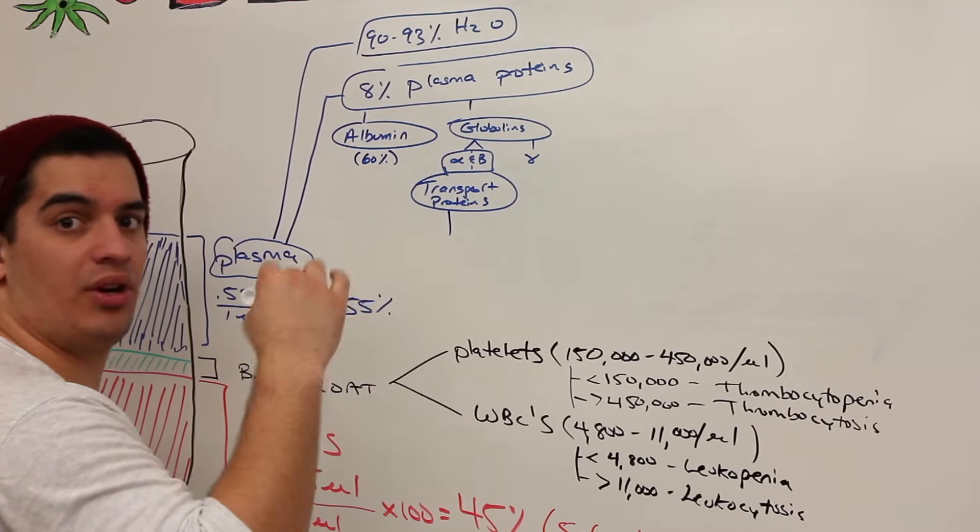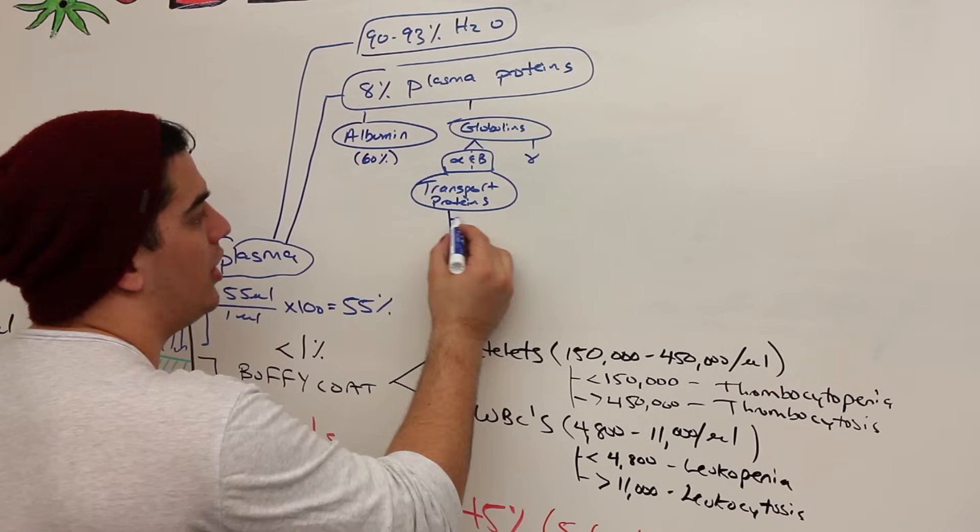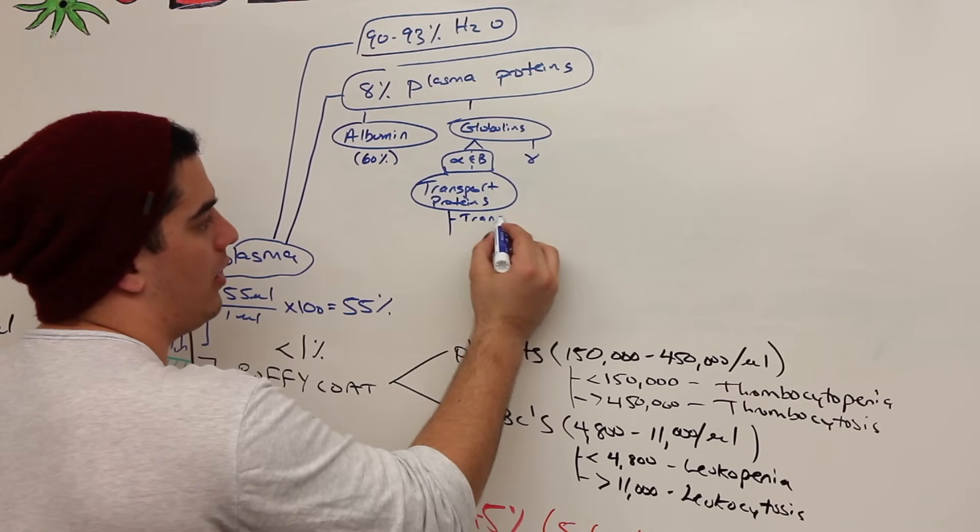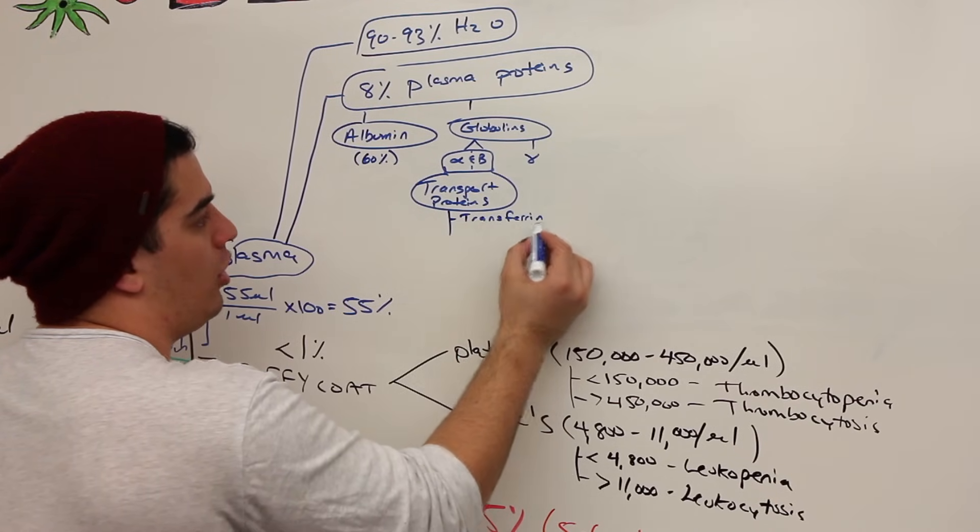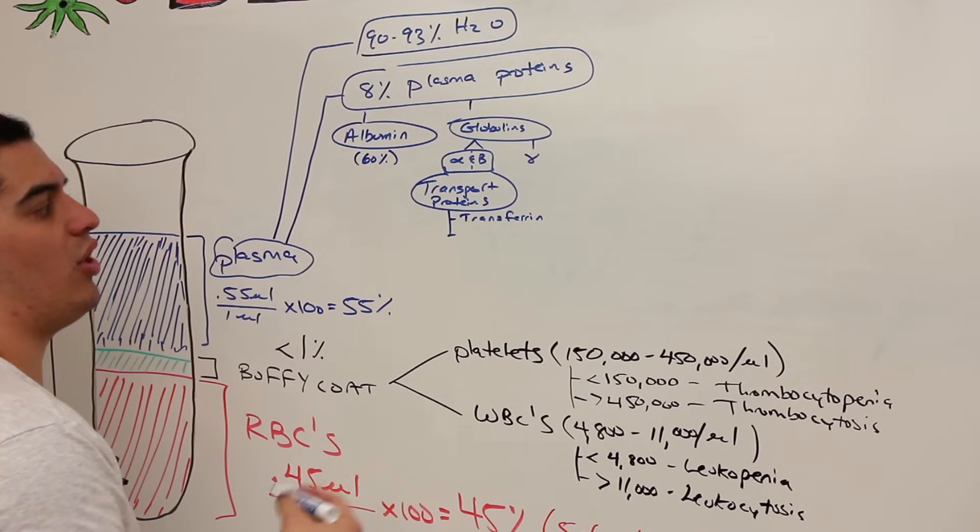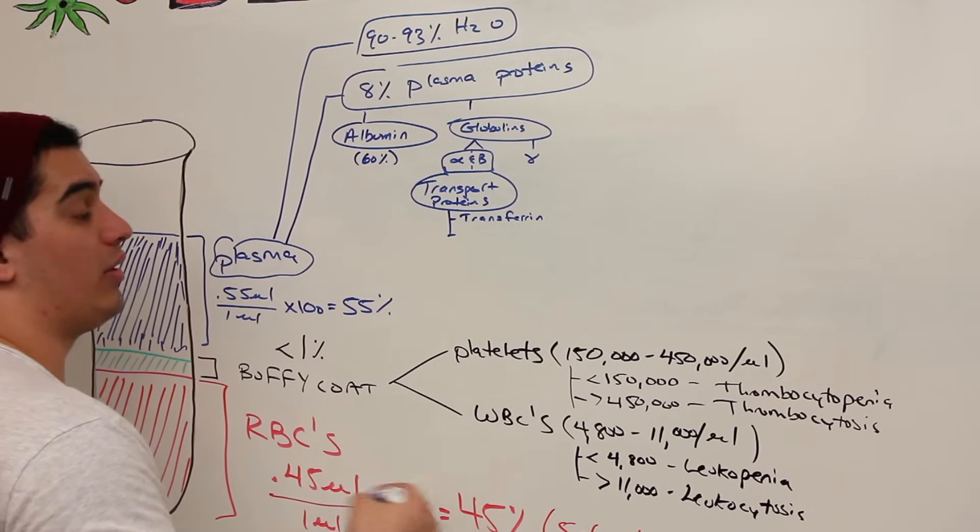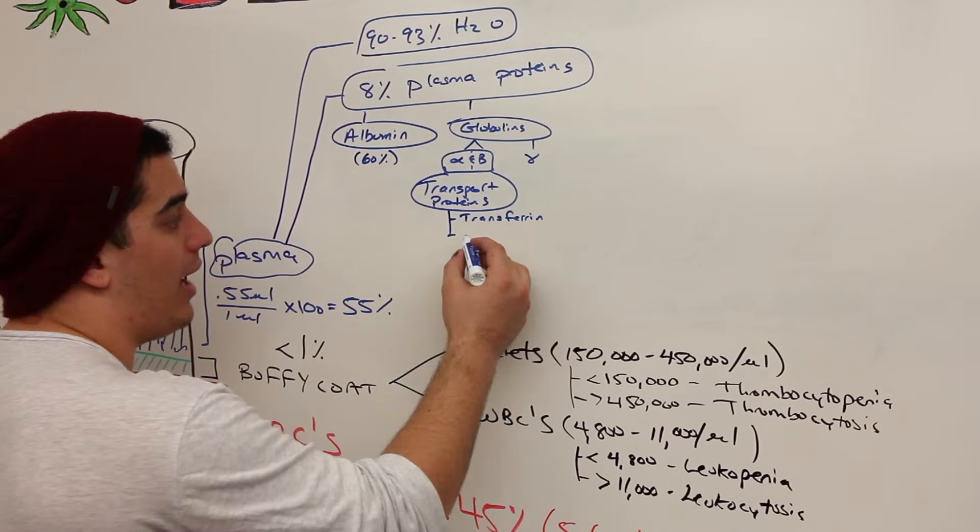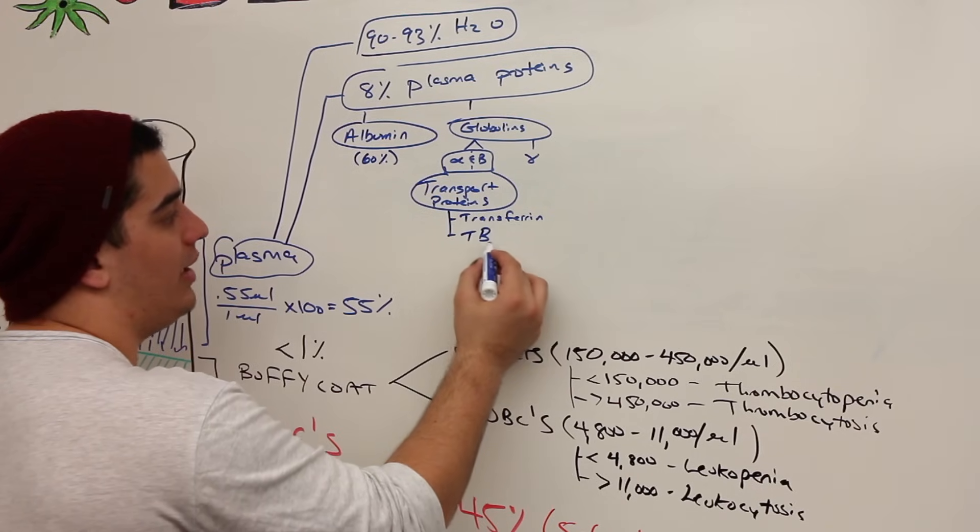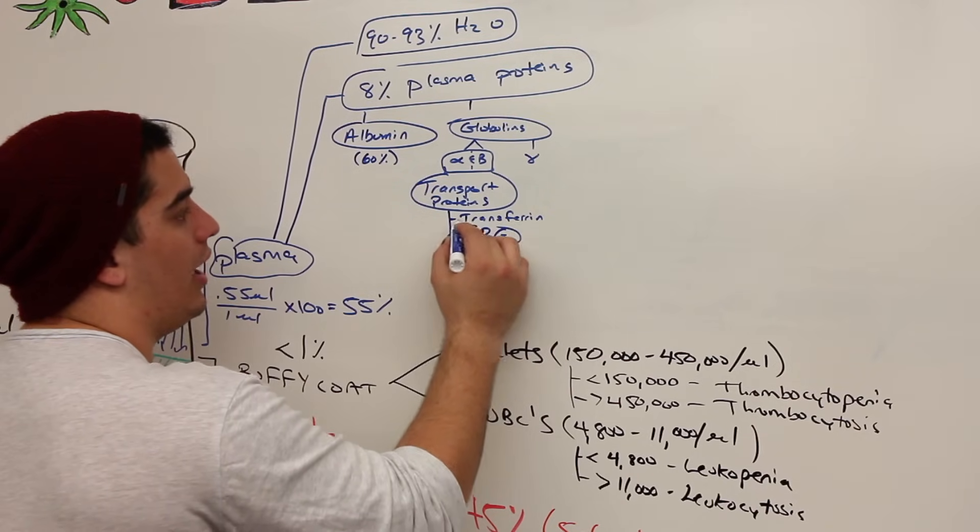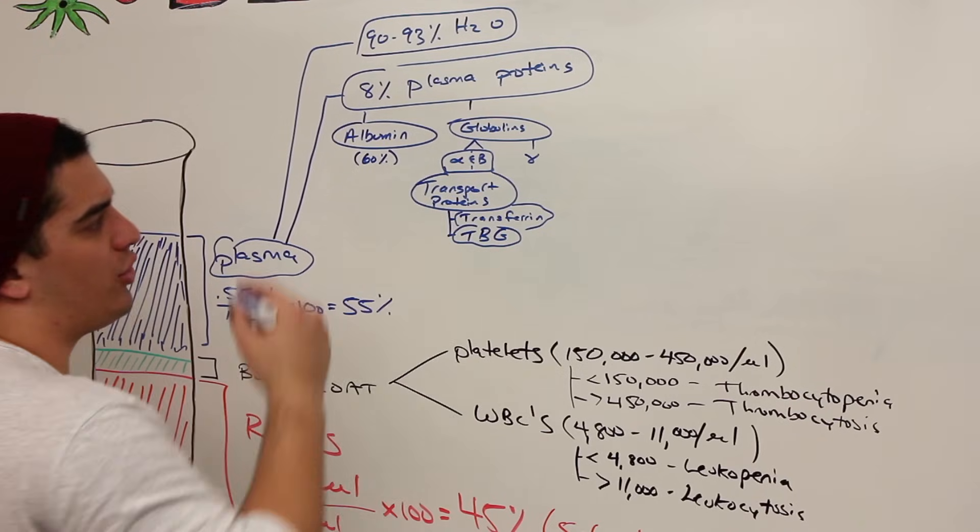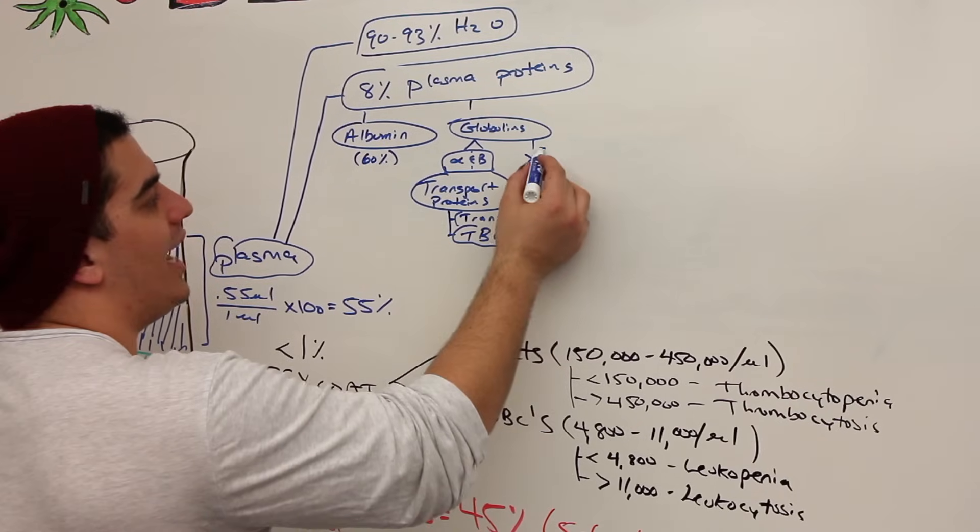Iron can't be in the bloodstream freely circulating because it can cause free radical reactions. So we have to bind him to transferrin. Certain types of hormones that aren't soluble within the bloodstream, like thyroxine or T3 and T4, they have to be bound to thyroxine binding globulins. So that's just an example, a quick example of our transport proteins.